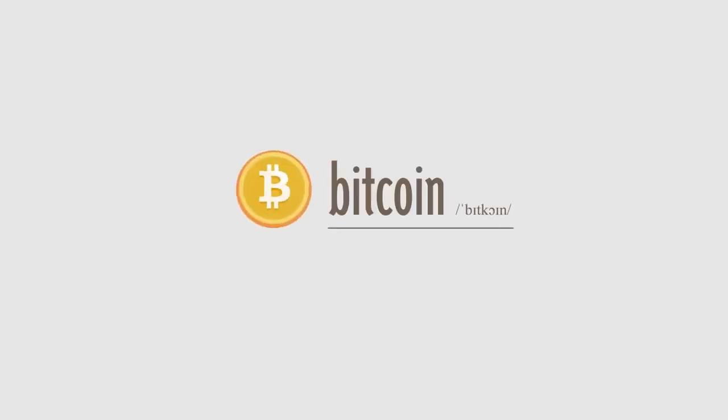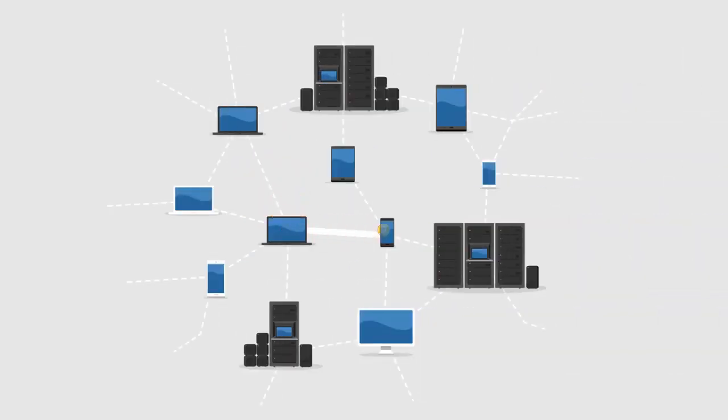What is Bitcoin? Bitcoin is the first decentralized digital currency. Bitcoins are digital coins you can send through the Internet.